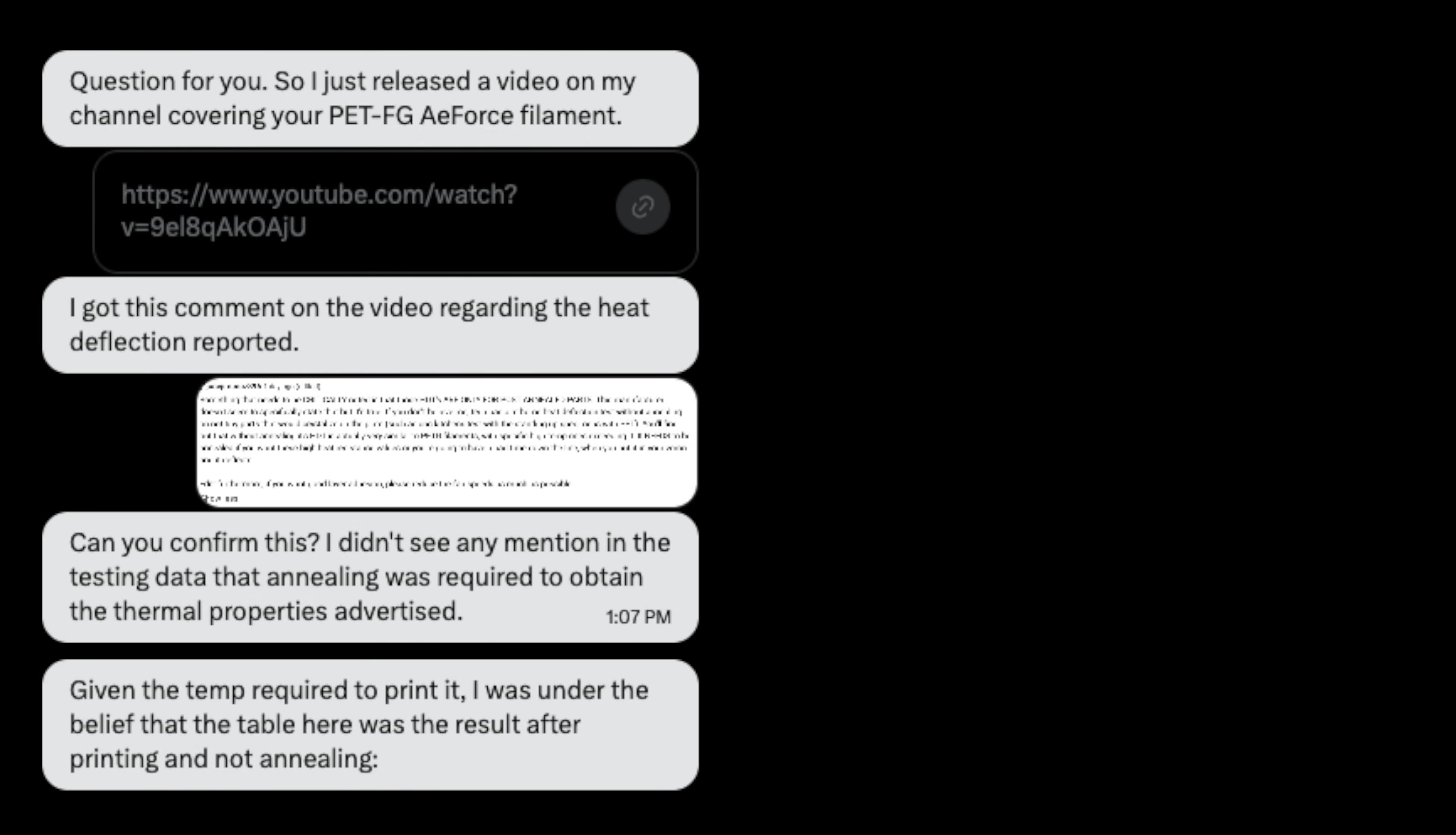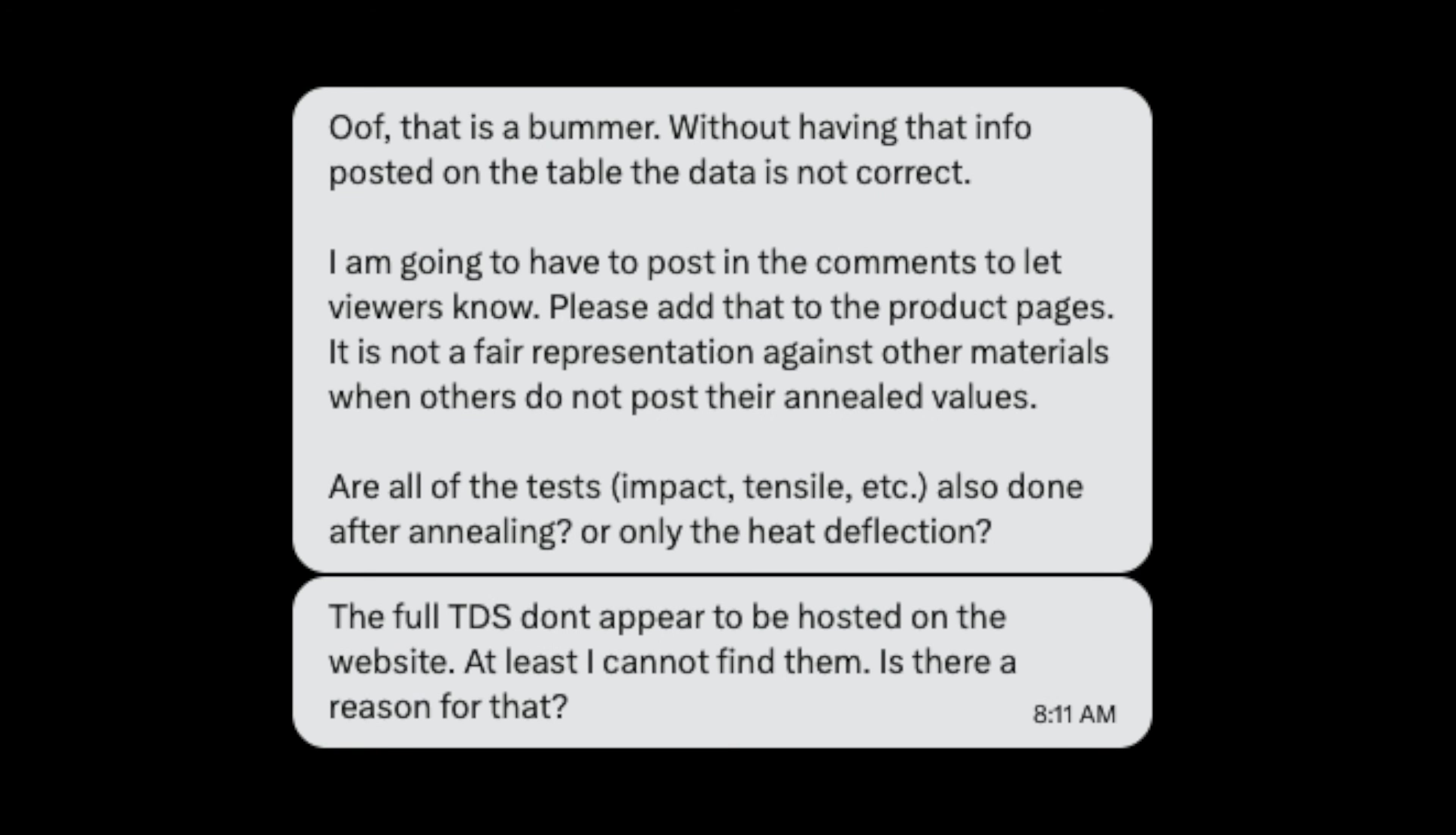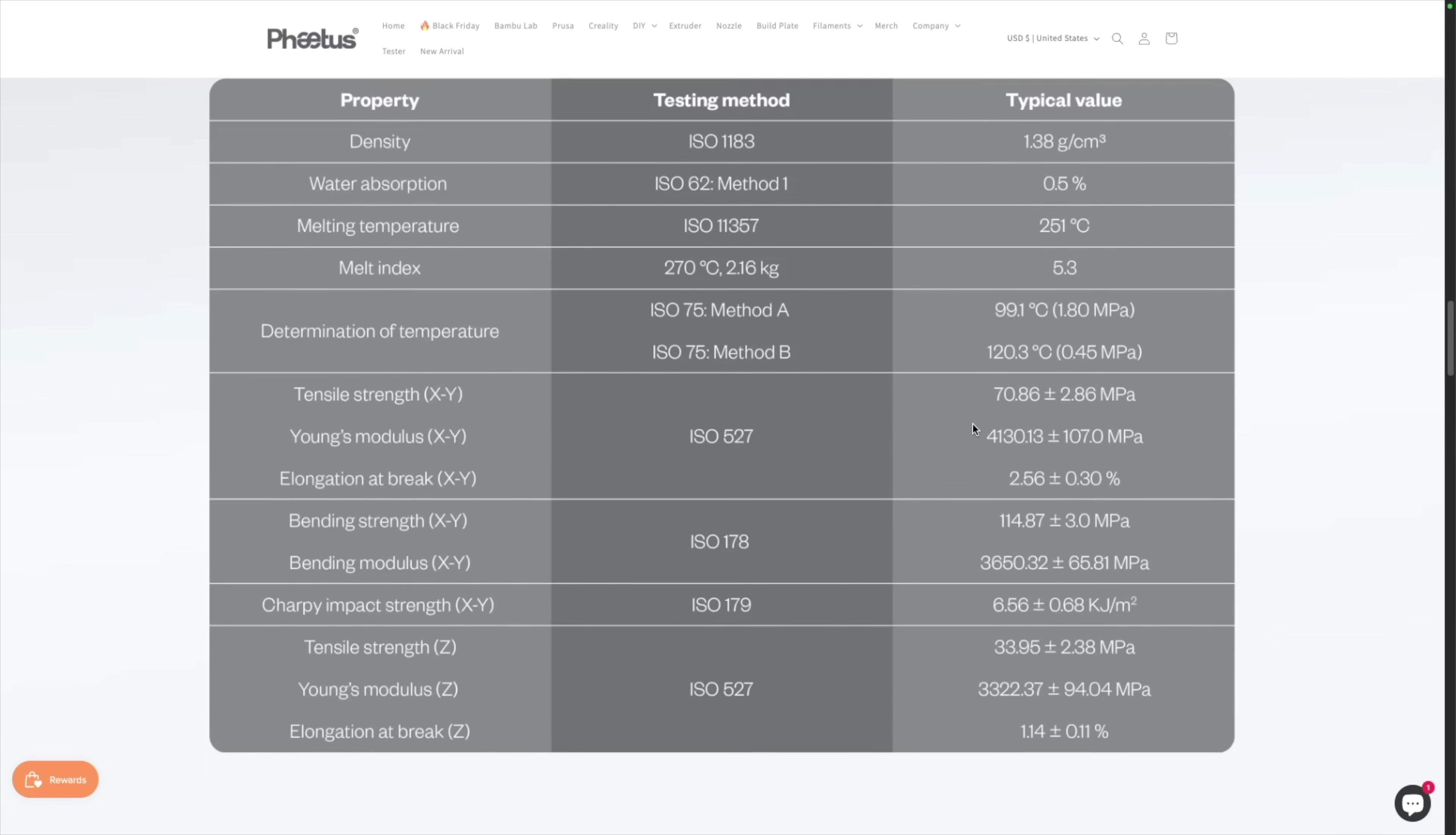After receiving these inquiries, I reached out to FATUS to get some clarity and was told that yes, the testing data was performed after eight hours of annealing the parts at 100 celsius. They said the information was available in their TDS, however at the time their TDS was not hosted anywhere and had to be emailed to me to actually access it. So I made the recommendation of adding that information about the data to the product page directly. The TDS is at least now available at the very bottom of the product page, but there is still no note next to the testing data that it does require annealing to actually achieve those results.